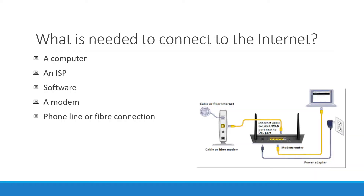So what do you need to connect to the Internet? You need a computer or a phone. You need an ISP, which is an Internet Service Provider. You need some software, and you need a modem. And then you need a phone line or a fiber connection.